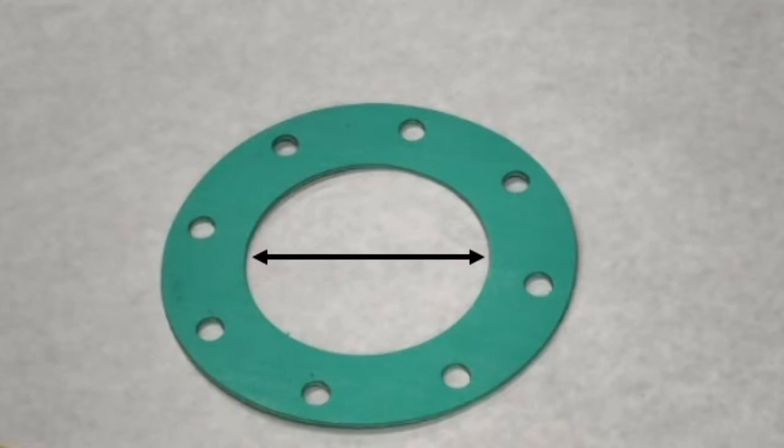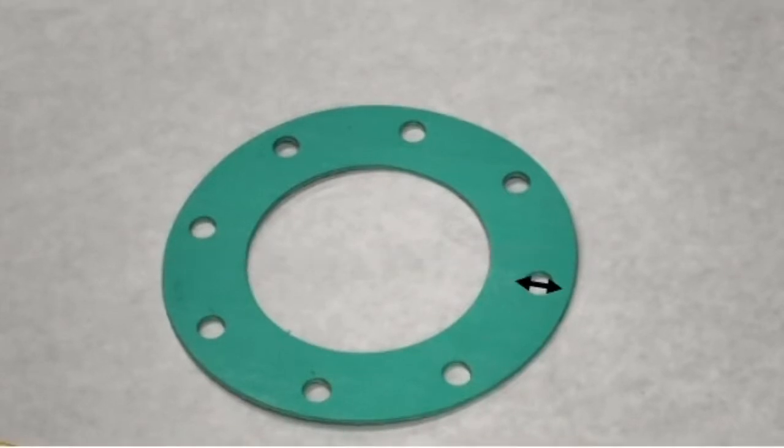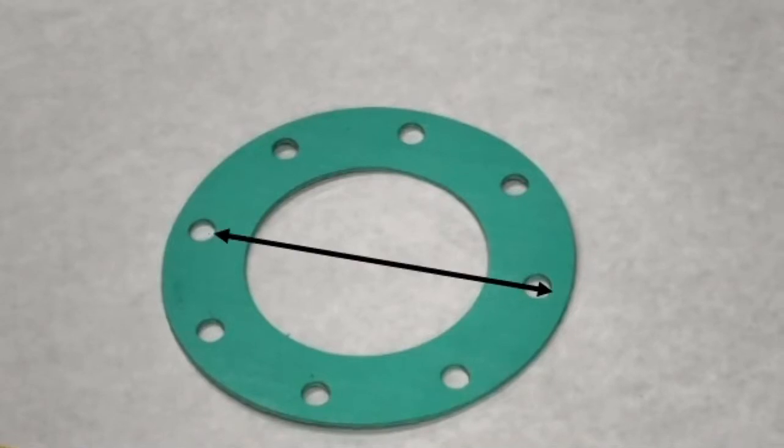First is the inside diameter, the outside diameter, number of holes, size of the hole, and the diameter of the bolt circle.